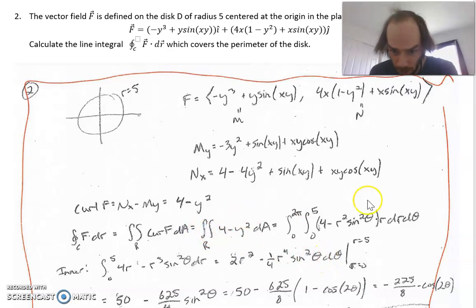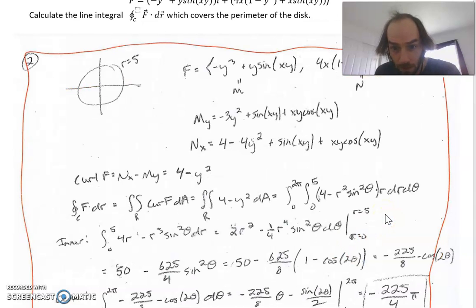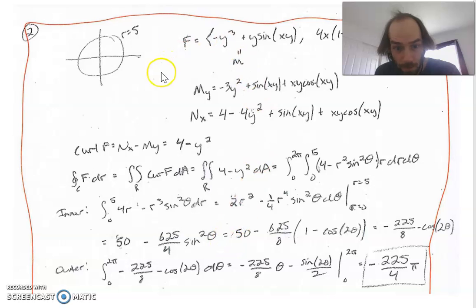I kind of did my notation poorly here. The dθ should not be there. I'm evaluating that from r equals zero to r equals five. There we go. Okay, sorry, had a short interruption there.